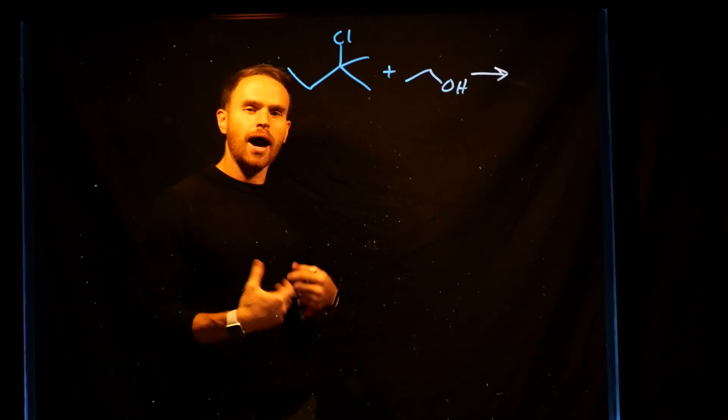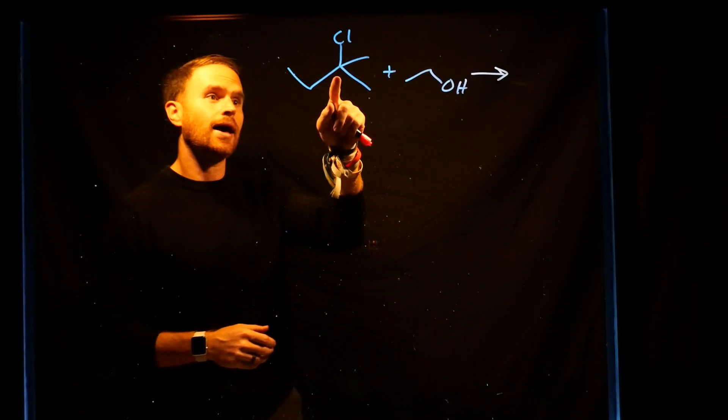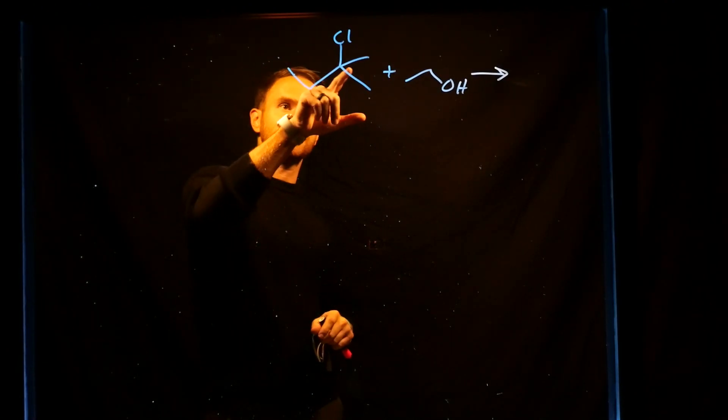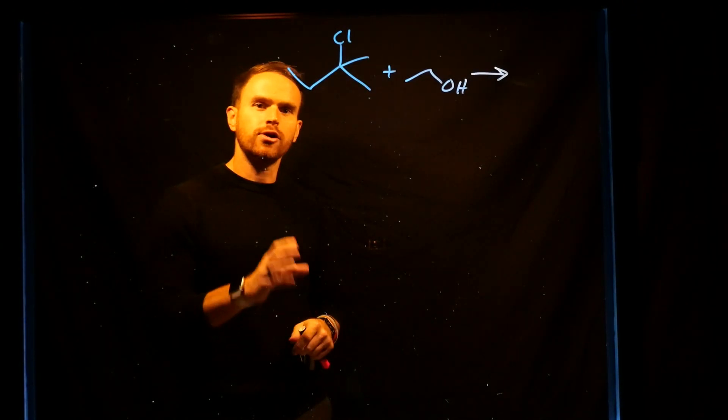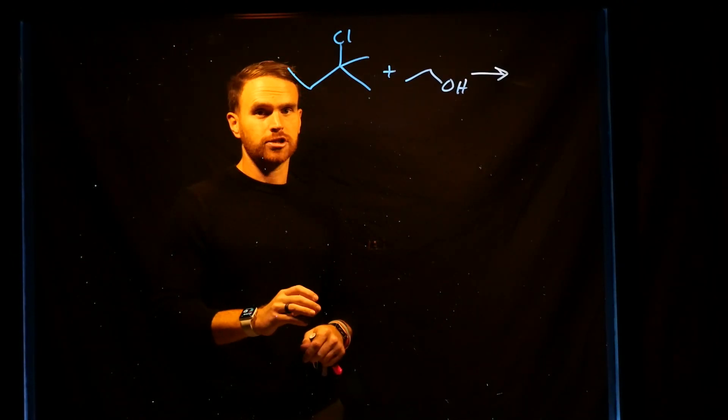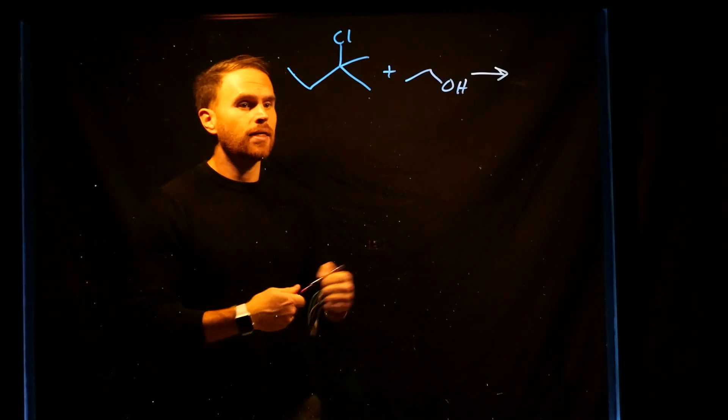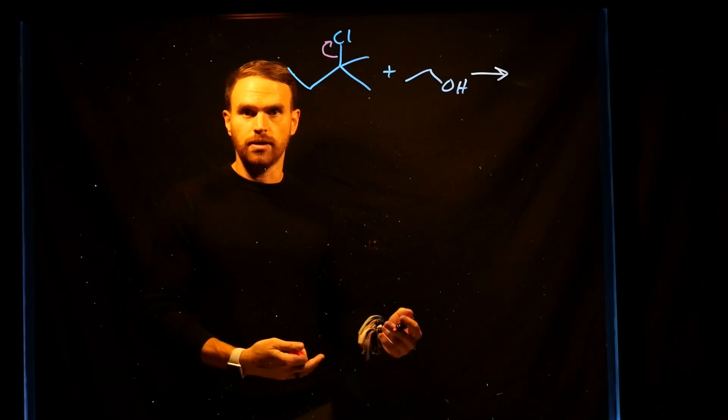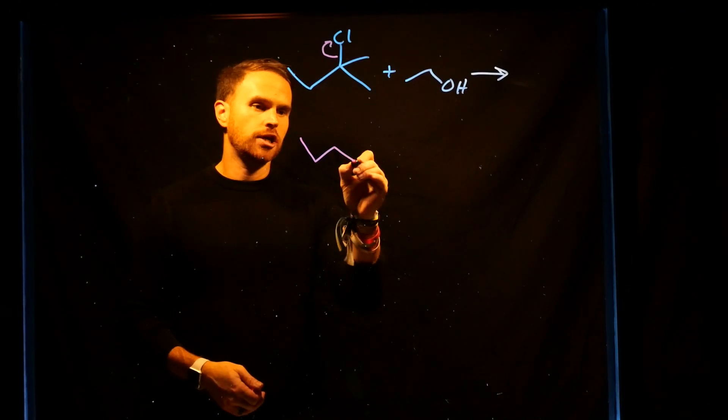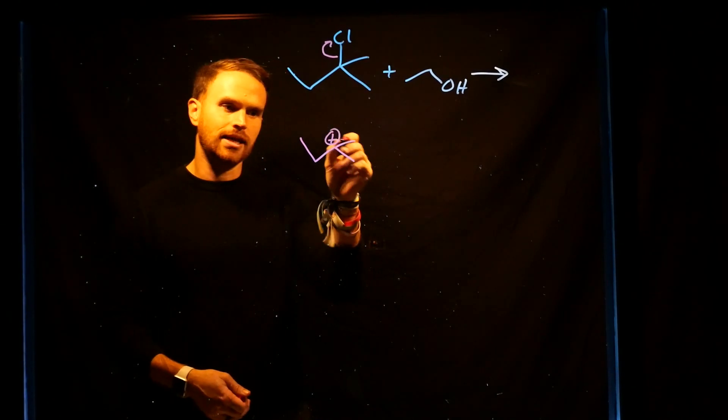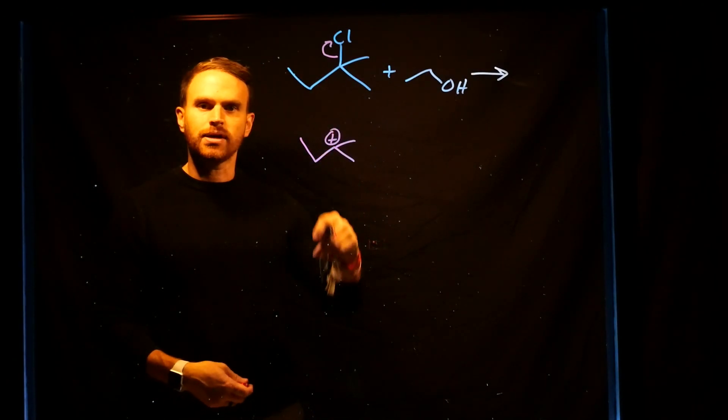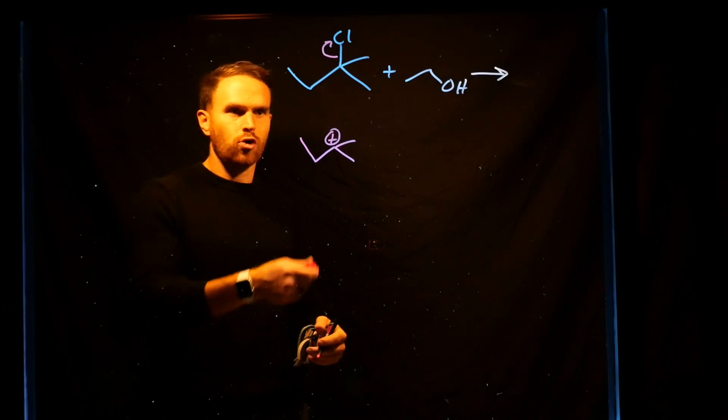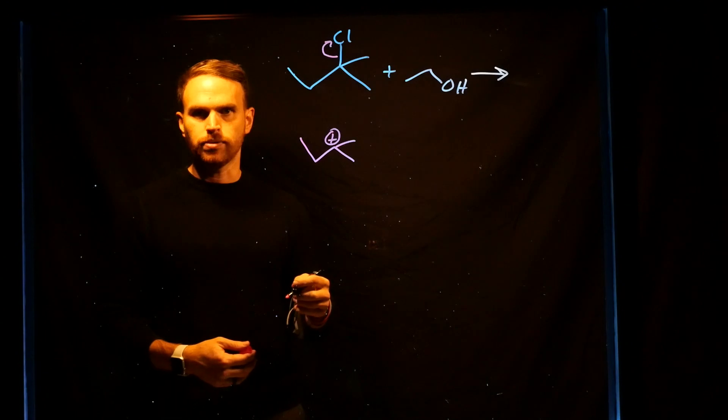For this reaction, I know that it is an SN1 reaction because I have a tertiary carbon that is going to very easily stabilize a carbocation. Additionally, the steric hindrance at that carbon center is going to prevent an SN2 reaction, which is a concerted pathway, from occurring. Therefore, I know that the very first step in an SN1 reaction has to be the leaving group leaving. In fact, this is what happens and it generates carbocation that is stabilized because it's tertiary. Importantly, because this is a process that happens very slowly, the rate determining step for this reaction is actually the leaving group leaving.